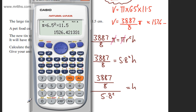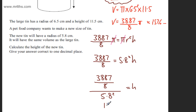So if we just put back the calculator, again, we could use this value. I'm just going to type it back in 3887 over 8 divided by 5.8 squared and that is going to give us the height. The height is going to be 14.44 so we can say that 14.4 centimeters is the height and that is given to one decimal place.